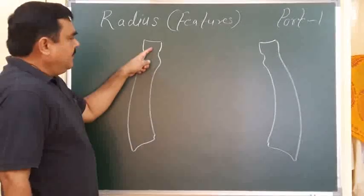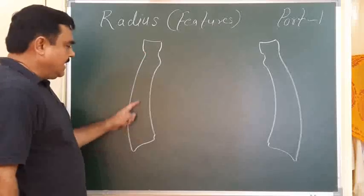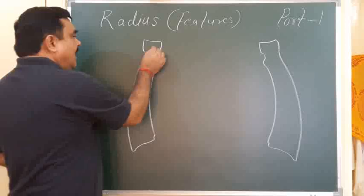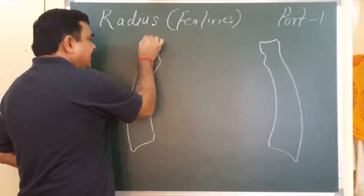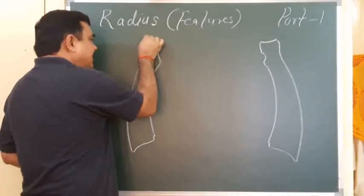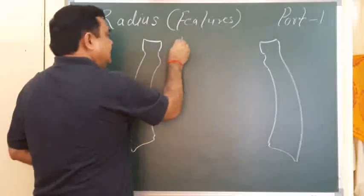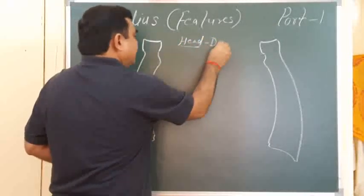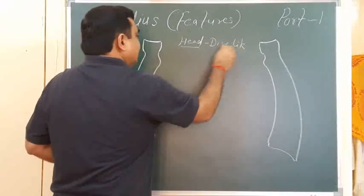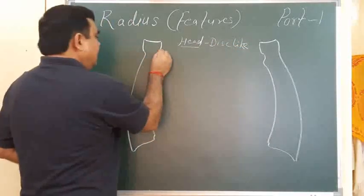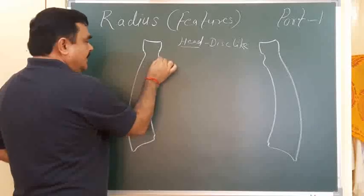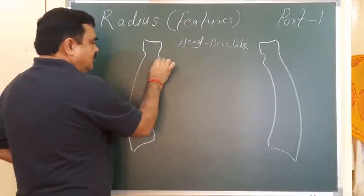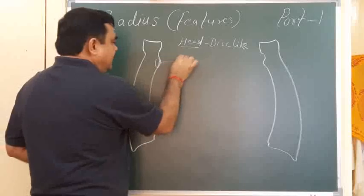The radius has an upper end, lower end, and shaft. Features of the upper end: the upper end has a head, which is disc-like. Then there is a neck. Then there is the radial tuberosity.